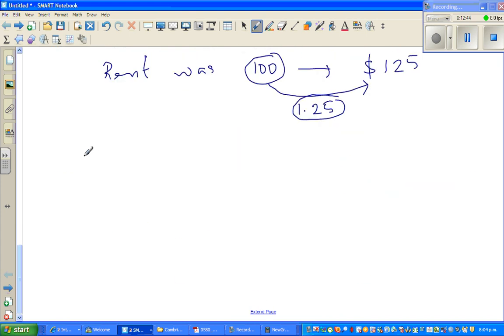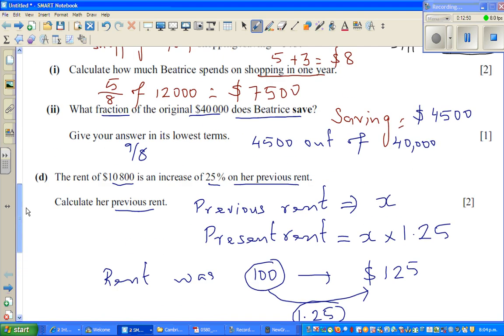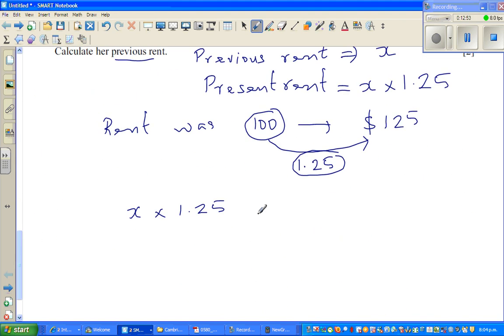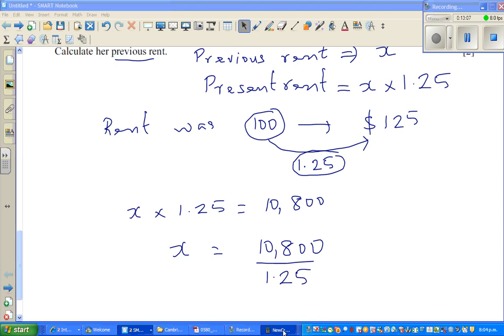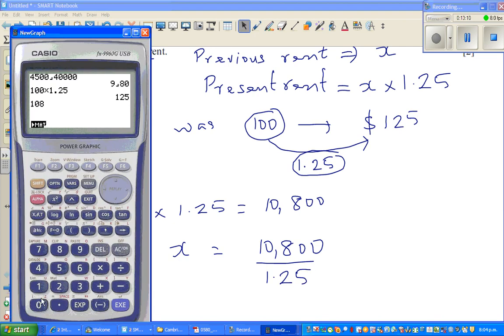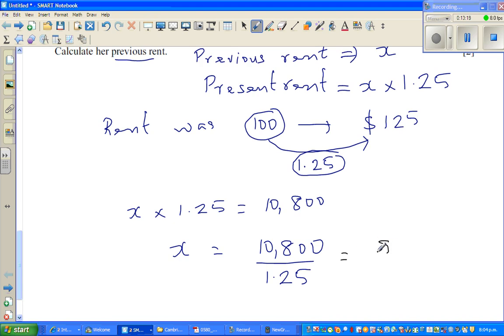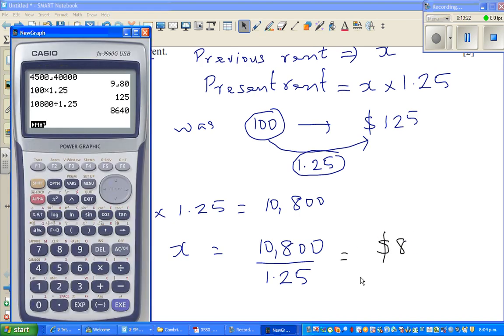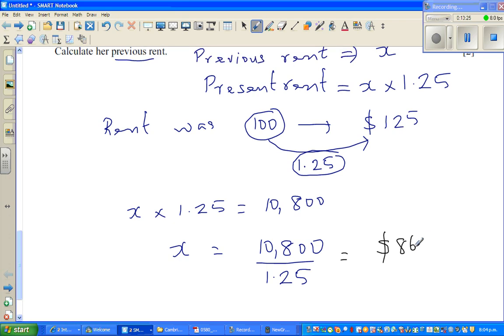So can you write now, X times 1.25 gives you the present rent which is $10,800. So X is your previous rent. So X would be, dividing both sides by 1.25, $10,800 divided by 1.25. So you can use a calculator. $10,800 divided by 1.25, which is $8,640. That's a pretty big rise. The answer was $8,640 was the previous rent.